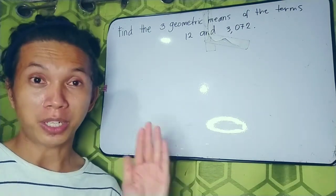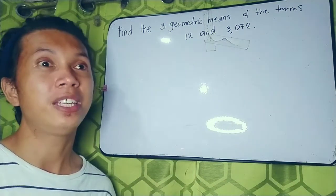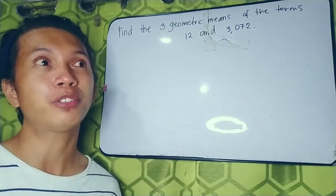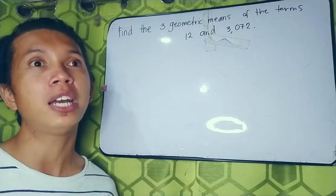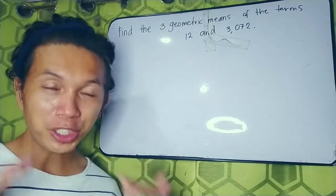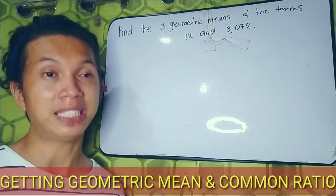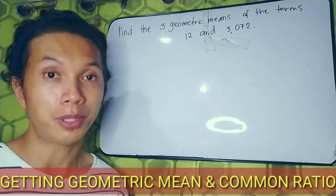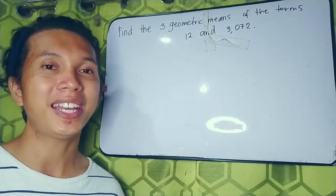Let's go back to our topic. Since we have already talked about geometric sequence and I have already introduced the formula for getting the missing term of a geometric sequence, our topic for this video is about geometric means — getting the geometric means and also getting the common ratio. So are you ready? Let's get started!